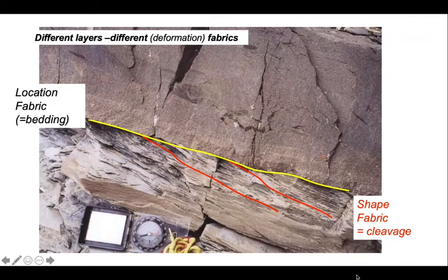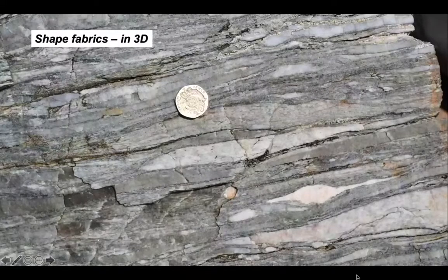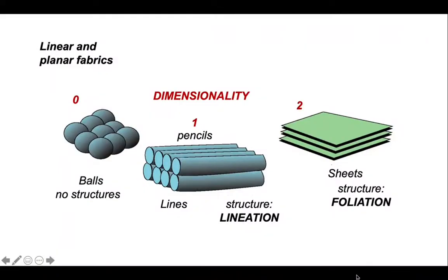Location fabrics like bedding are generally planar features, and you might also think that shape fabrics are always planar — cleavage here is a plane too. But let's think about shape fabrics in three dimensions. In describing linear and planar fabrics, consider dimensionality: two-dimensional objects are what we generally consider sheets — bedding planes, cleavage planes — they form a foliation. But objects don't have to be sheets; they can also be linear like pencils, in which case the fabric is linear and the structure is called a lineation. Or they can have no preferred orientation at all, in which case statistically the objects are spheres.